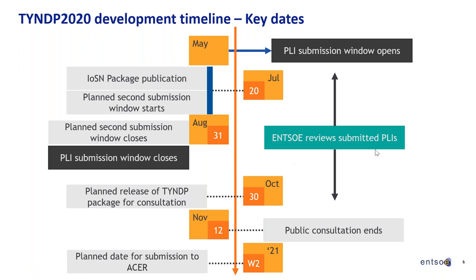Mark is asking for clarification of what IoSN means. It's Identification of System Needs — that's what we call the needs package. It's a series of reports to be published next month, around the end of July, basically looking at where additional infrastructure could increase benefits at European level. It's a study that's part of the TYNDP; it was released for the first time in TYNDP 2018. If you want more information, maybe we can exchange via email.